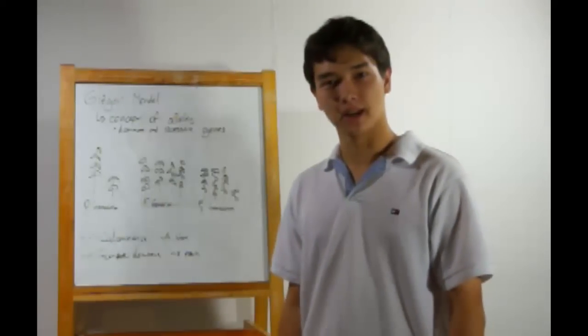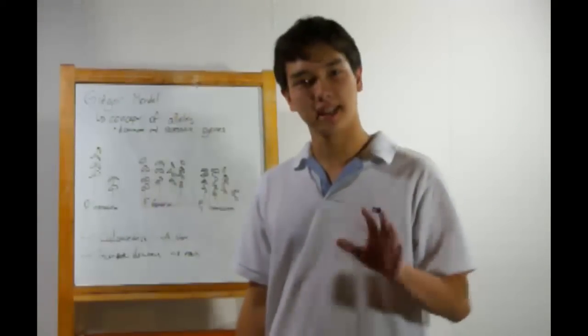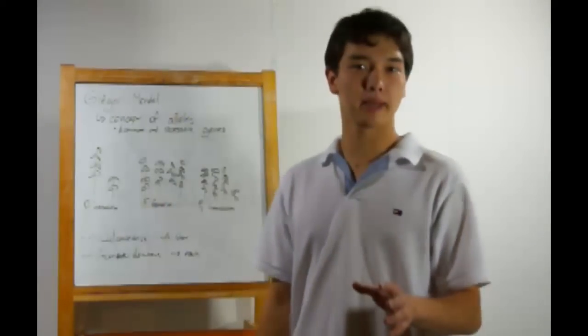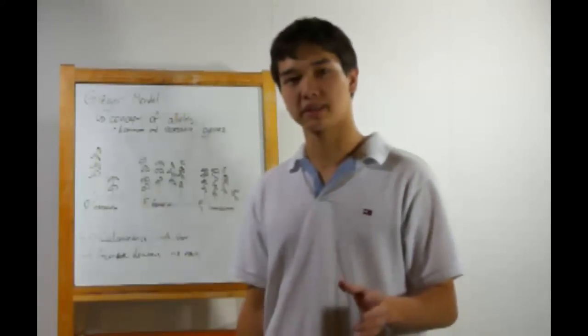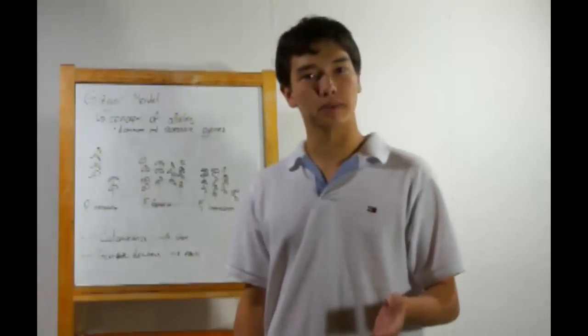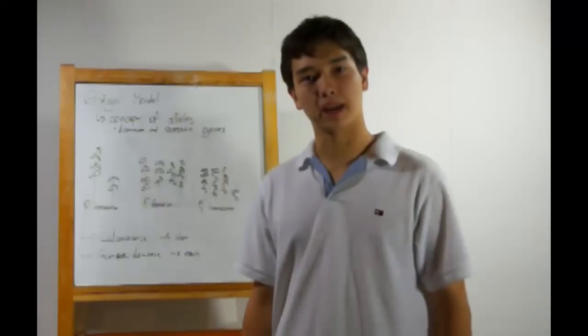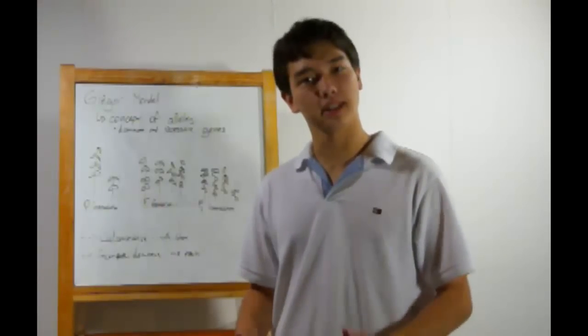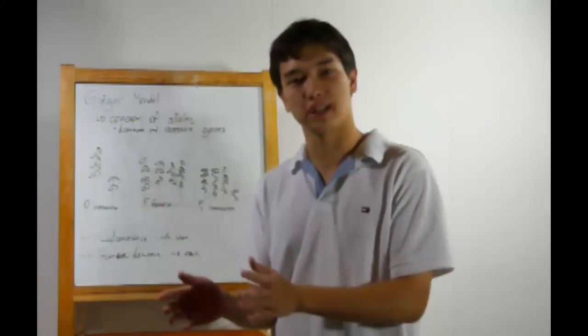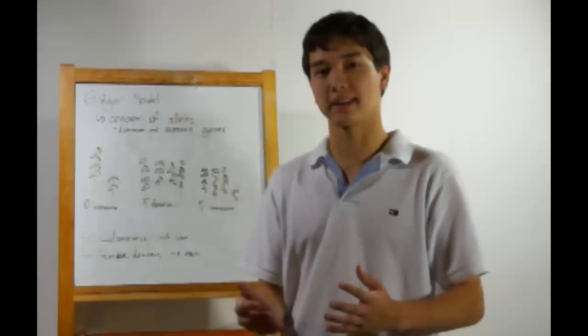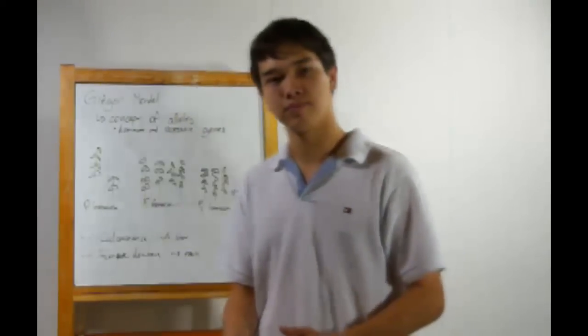Hi, I'm Brian Freer tutoring high school biology. Today's topic: Gregor Mendel and Punnett Squares. Gregor Mendel was an Austrian monk who came up with the idea of alleles, which led to genes and ultimately genetics as we know it.